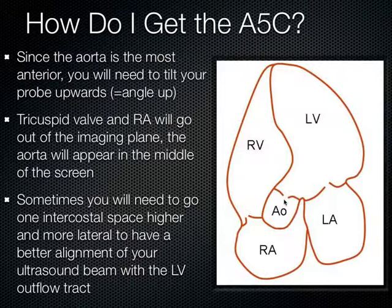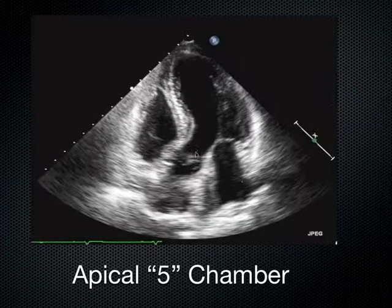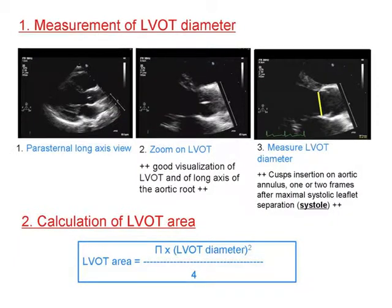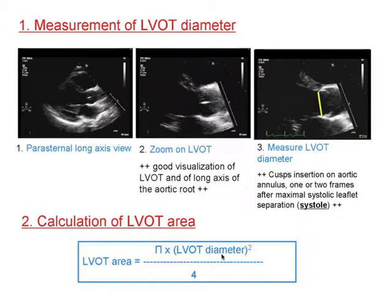This is where we're going to be putting the pulse wave Doppler in order to measure cardiac output. We start in the parasternal long axis, where we can see that the aortic valve is closed, and then we scroll along until that valve goes from closed to open. Then we measure the left ventricular outflow tract diameter. You lock that value into the computer and it takes the LVOT diameter, squares it, times it by pi, divides it by 4 — giving you the LVOT area.